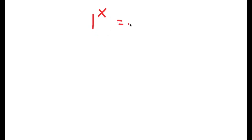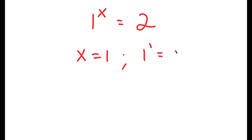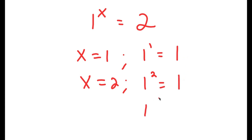So in this video, I'm going to solve the equation 1 to the power of x is equal to 2. Before we even start solving this — if x equals 1, then 1 to the power of 1 equals 1. If x equals 2, then 1 to the power of 2 is also equal to 1. Even 1 to the power of 10 is still equal to 1. So what possible value of x can make 1 to the power of x equal to 2?